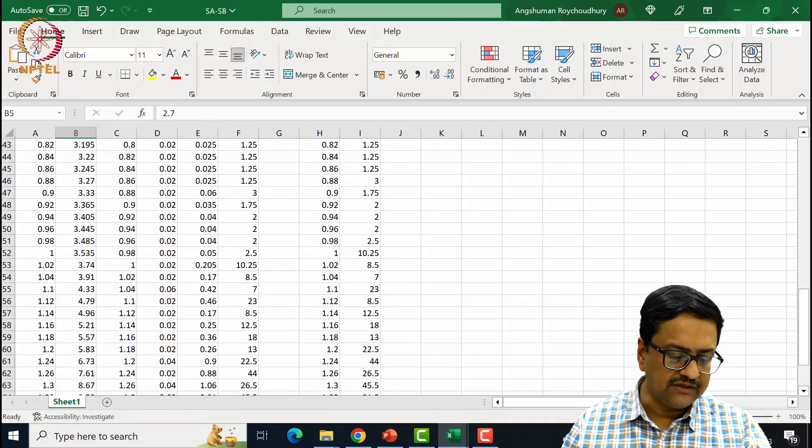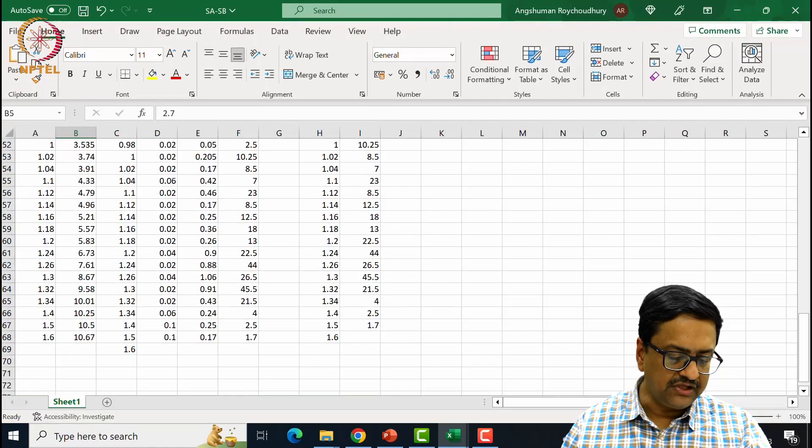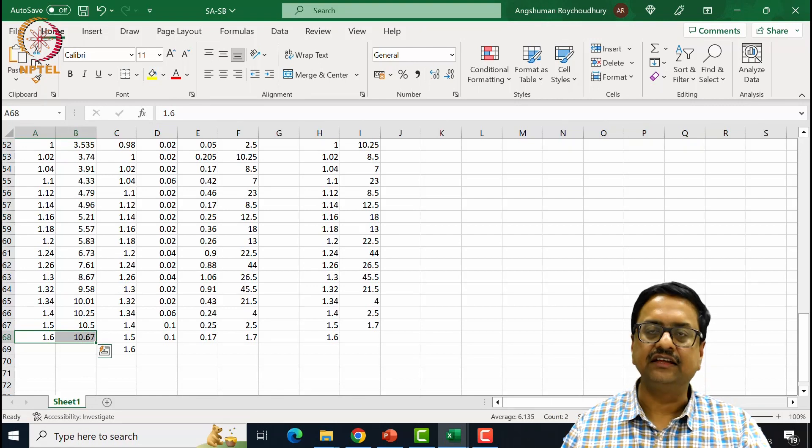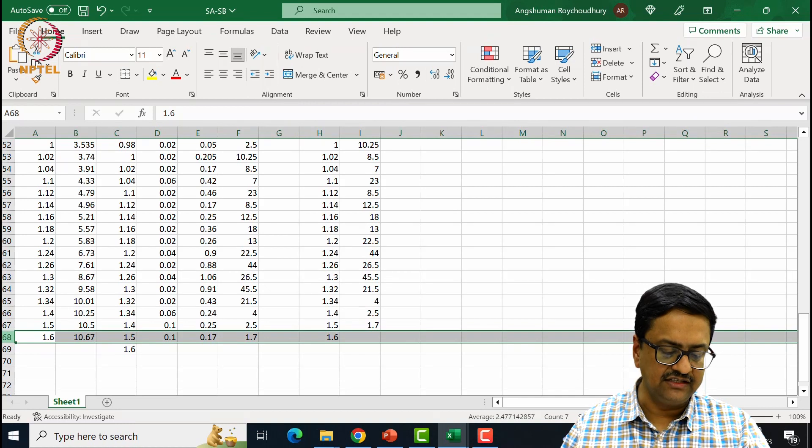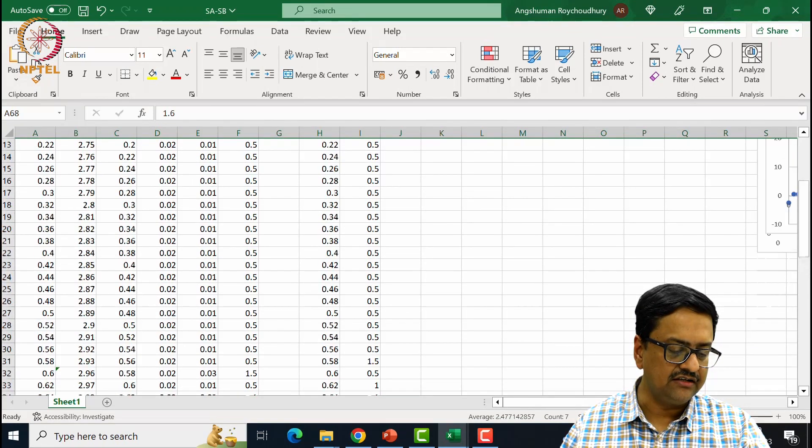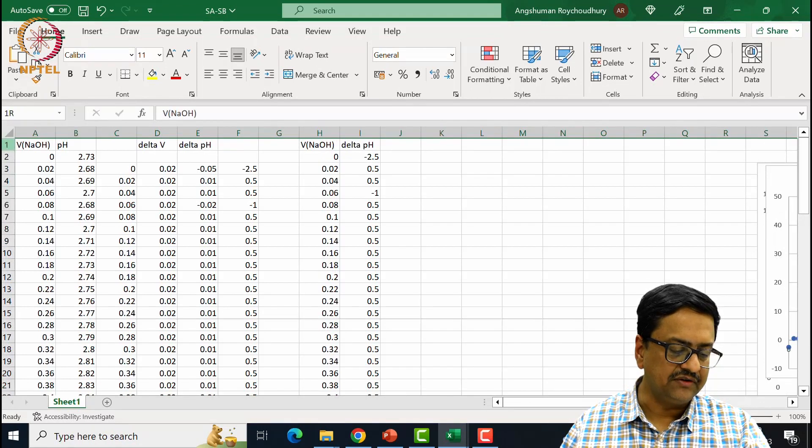And if you remember, we have done it till the pH reached 10.67. So we have about 68 readings. If you look at this excel sheet, I have 68th row. That means we have 67 readings except the first one.